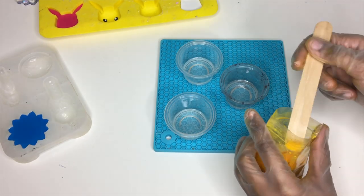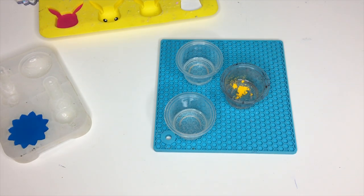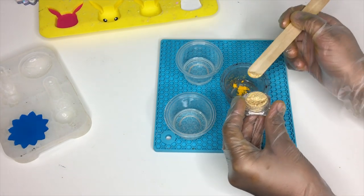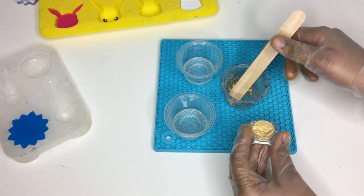So now I'm going to get started on the backings of the charms. So I'm just placing my pigment colors into the three cups of resin and then I'm going to pour them into the molds.